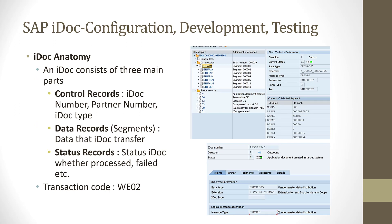Let's look at the IDOC anatomy. IDOC is divided into three parts: control records, data records, and status records. Control records define and give the IDOC number, give its partner number — which is the identification for SAP system one — and then another system, which is SAP system two or the delivery address. Then the type of IDOC — you can have different types of IDOCs.